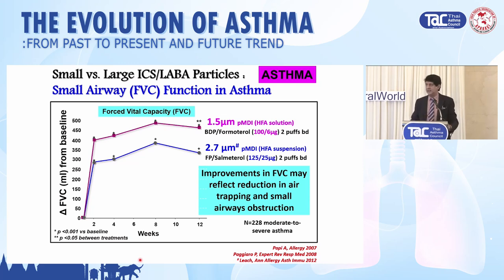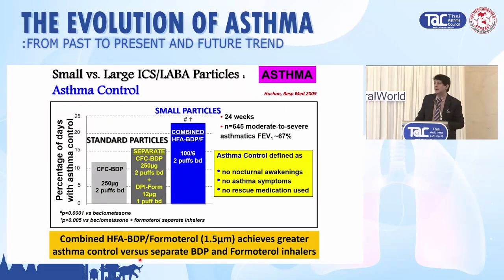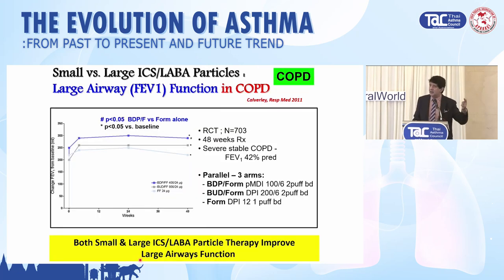Looking at FVC as a measure of small airways, only the 1.5 micron was able to improve and reduce air trapping compared to the 3 micron average aerosol. Does small particle improve asthma control? Yes. A 24-week study by Huchon, where asthma control was defined by nocturnal asthma symptoms and rescue use, showed that BDP-formoterol extra fine achieved far greater percentage of days with asthma control compared to standard sized particles.